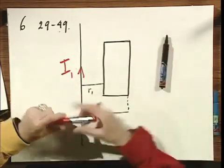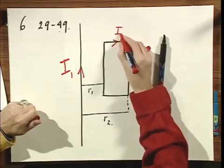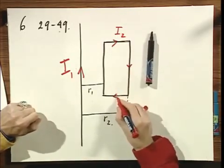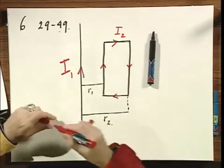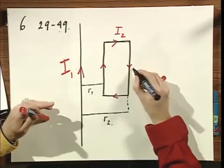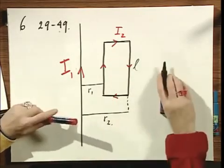This loop itself has a current going through it, I2. And the length of this arm equals L, and the length of this part of course is R2 minus R1.